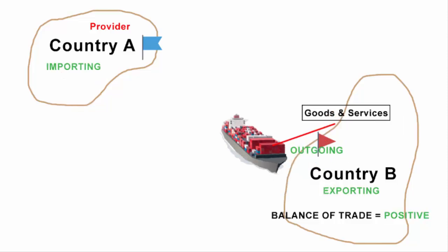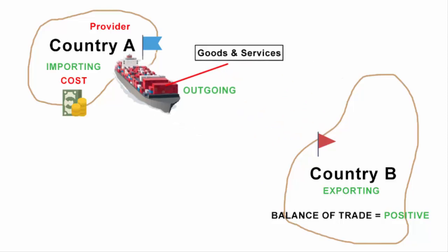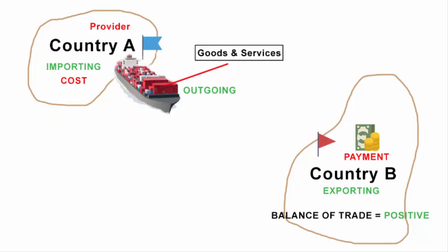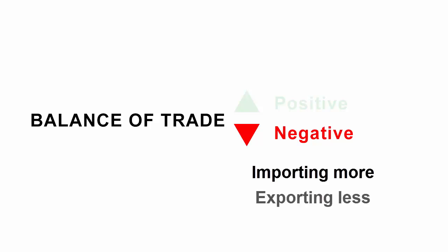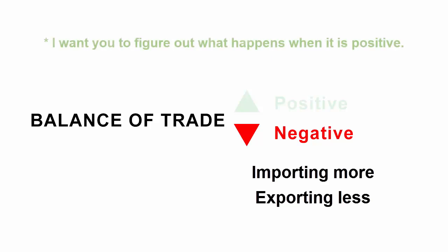The balance of trade becomes positive when the opposite happens, wherein your exports are more than imports. To summarize: a negative balance means a country is importing more — that is, spending more on buying goods than it earns from exporting its own goods. A negative balance of trade leads to exhaustion of a country's financial reserves.